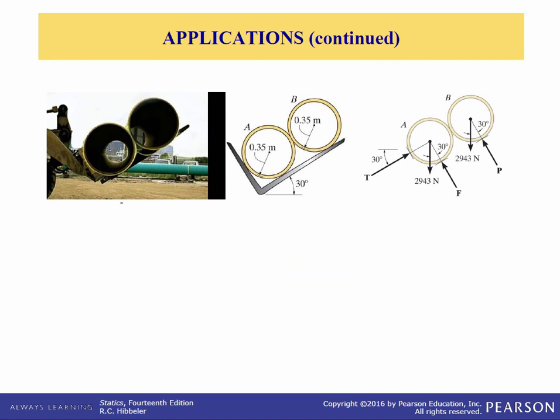Here we have two smooth pipes each having a mass of 300 kilograms and they are being supported by the tines of this loader fork. How can we determine all the reactive forces?